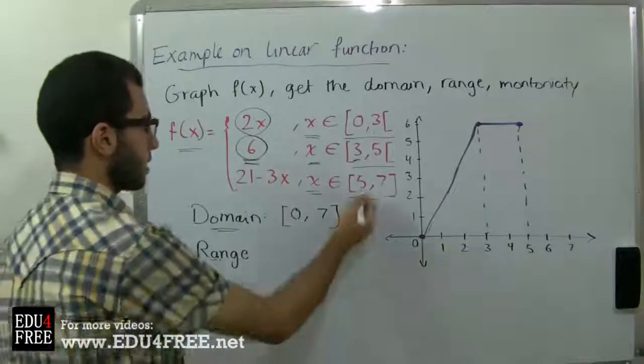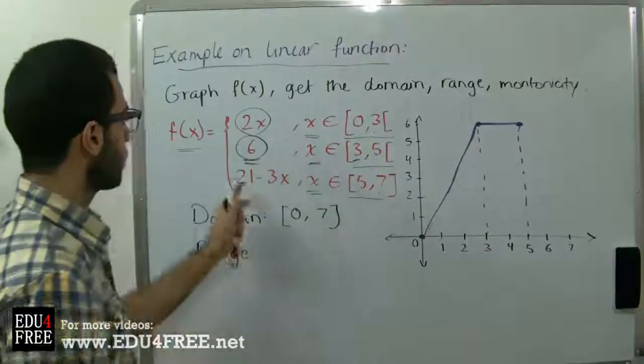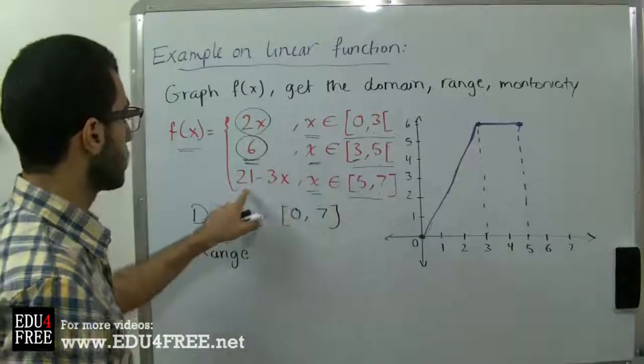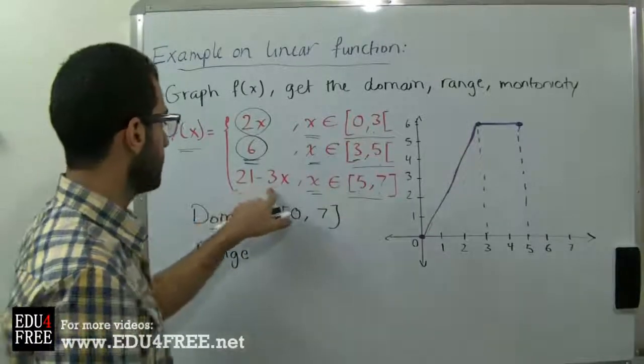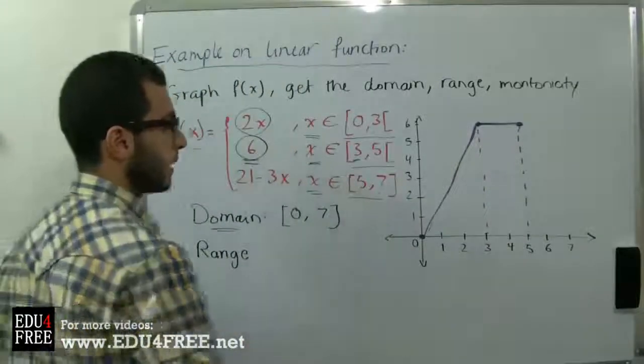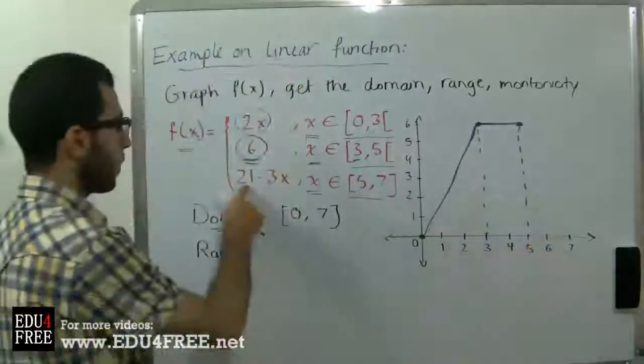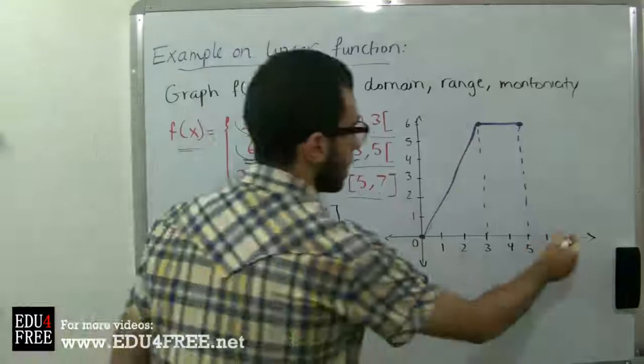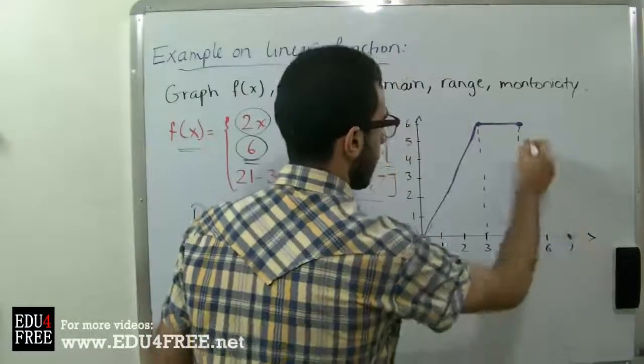At x equals 5, which is 15, so 21 negative 15 is 6, so it's at 6. Then at 7 it's 21 negative 3 times 7, which is 21 negative 21, so it gives a 0.